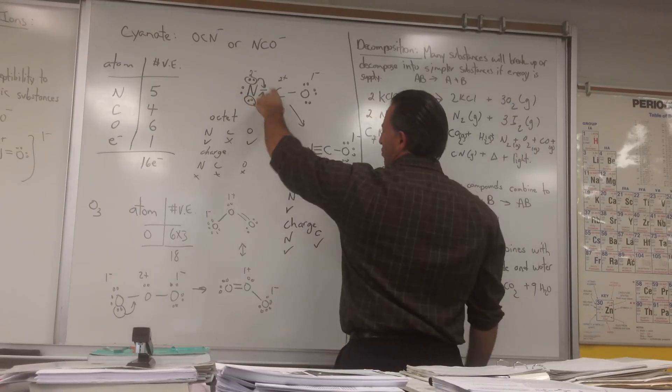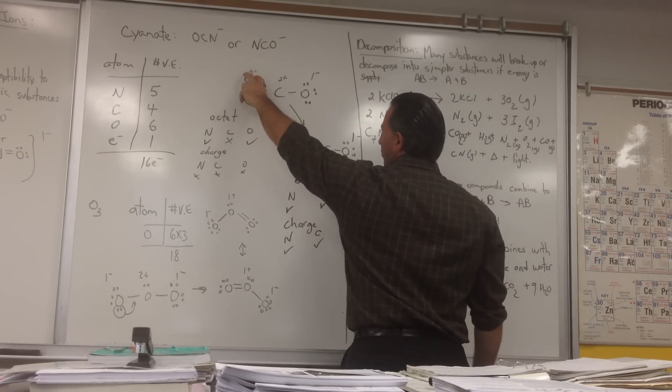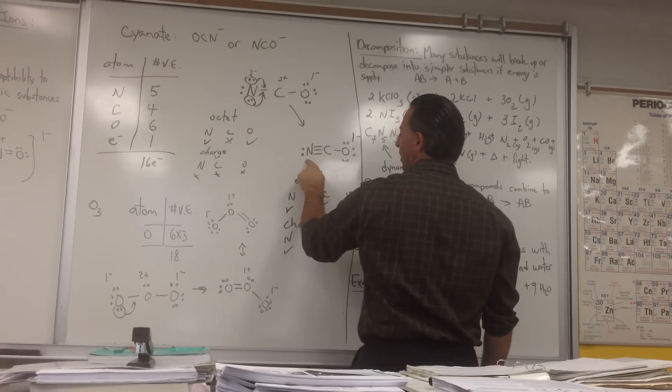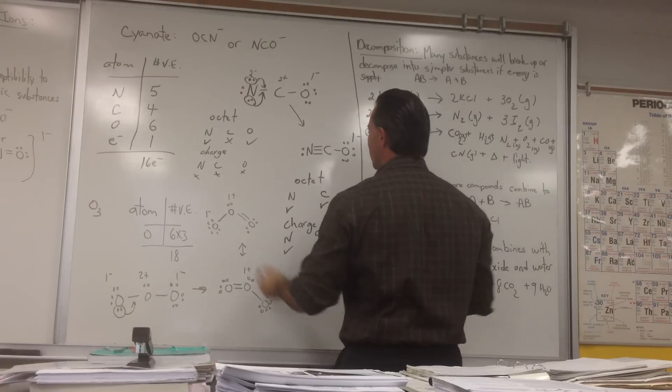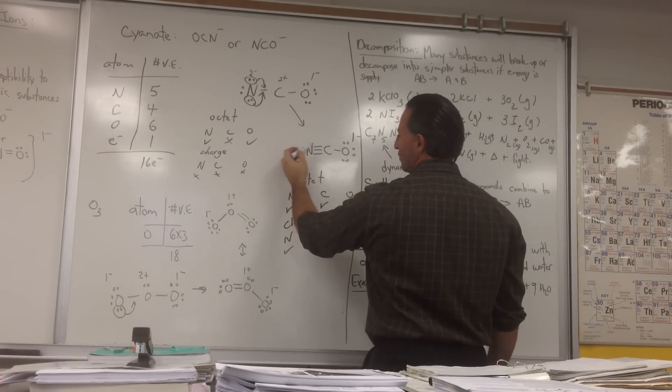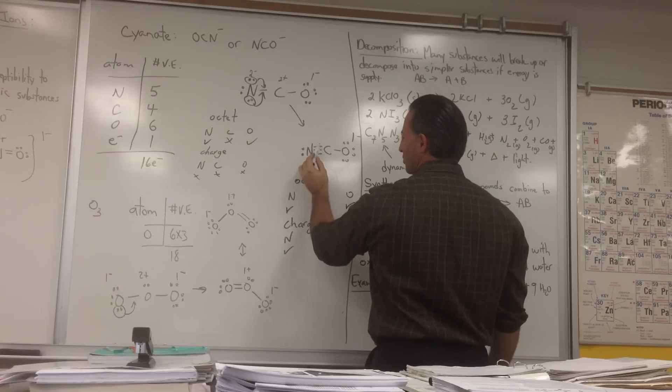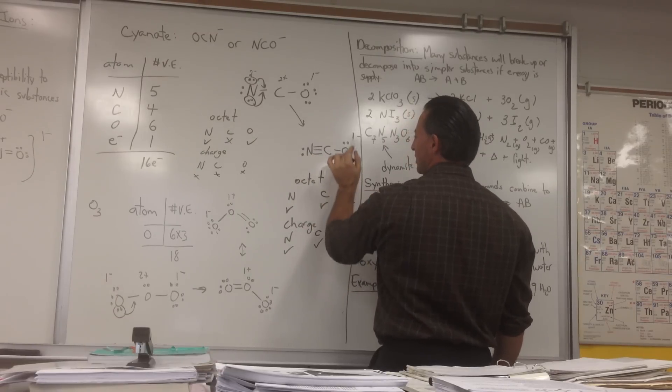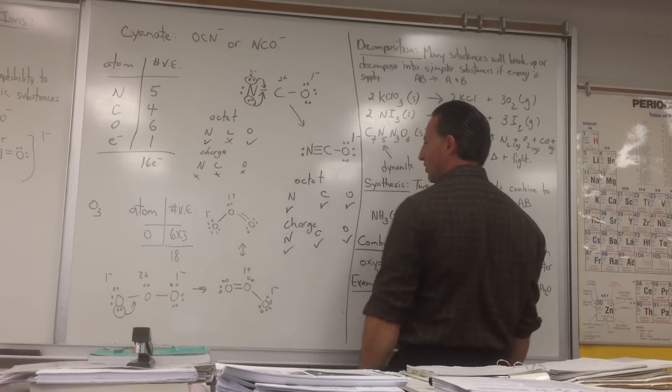If we rewrite the Lewis structure by placing these two lone pairs as bonding pairs, now we have triple bonded carbon and nitrogen with a lone pair on nitrogen. All the octet requirements are met. We see that nitrogen has 2, 4, 6, 8, carbon has 2, 4, 6, 8, and oxygen has 2, 4, 6, 8.